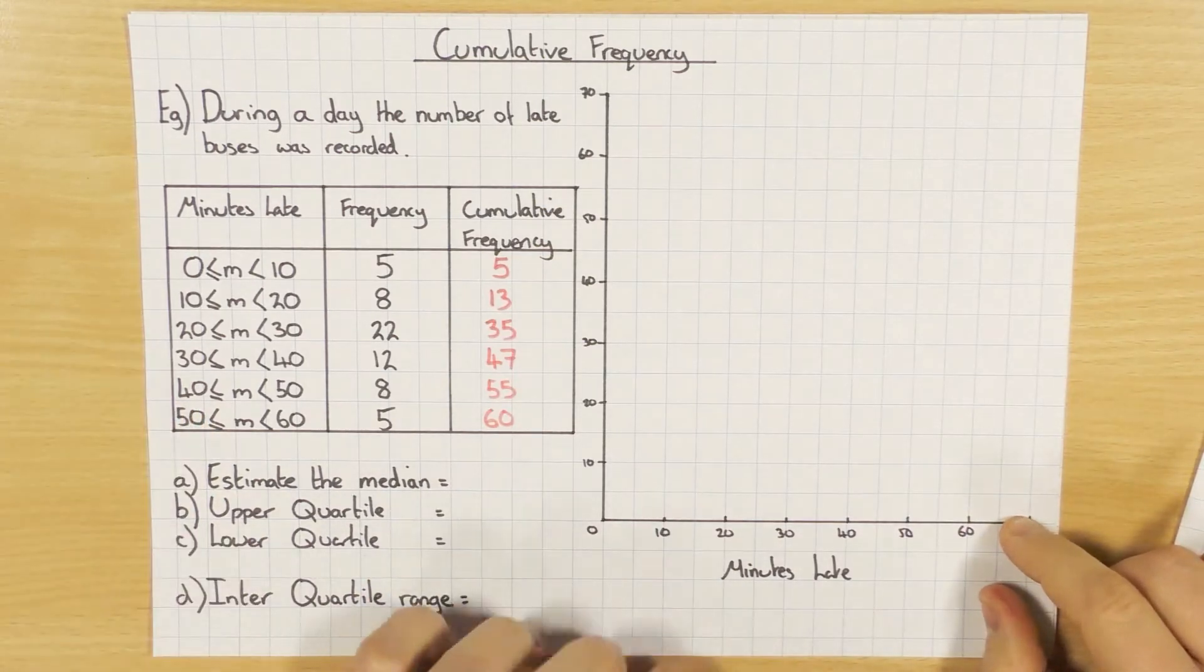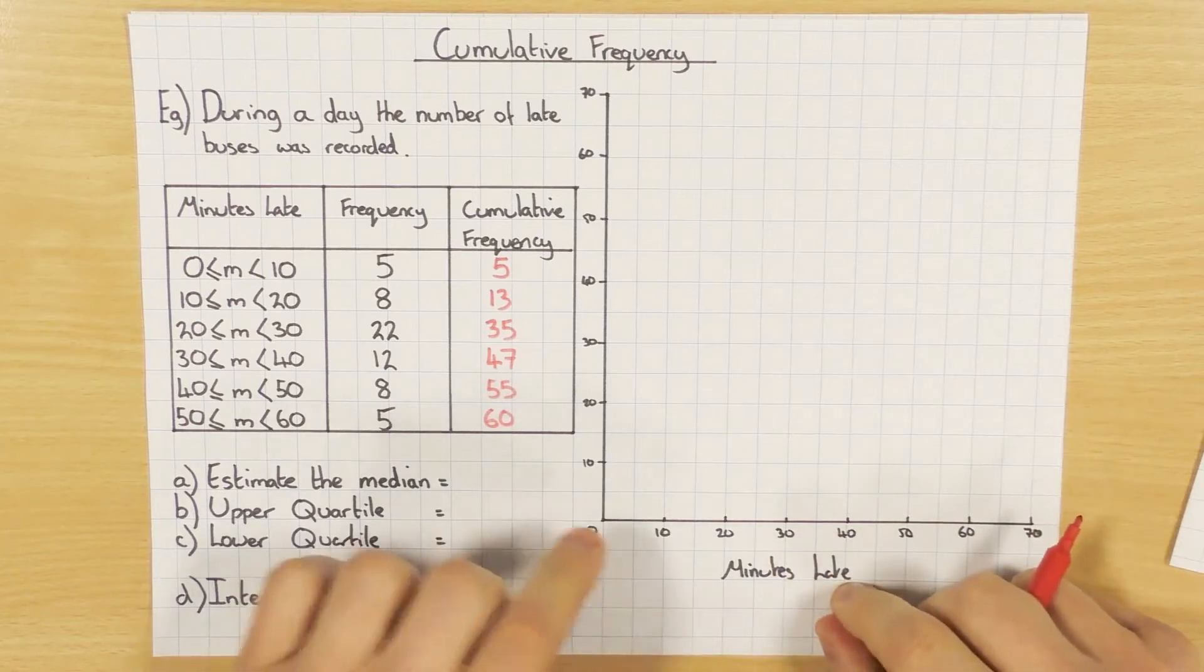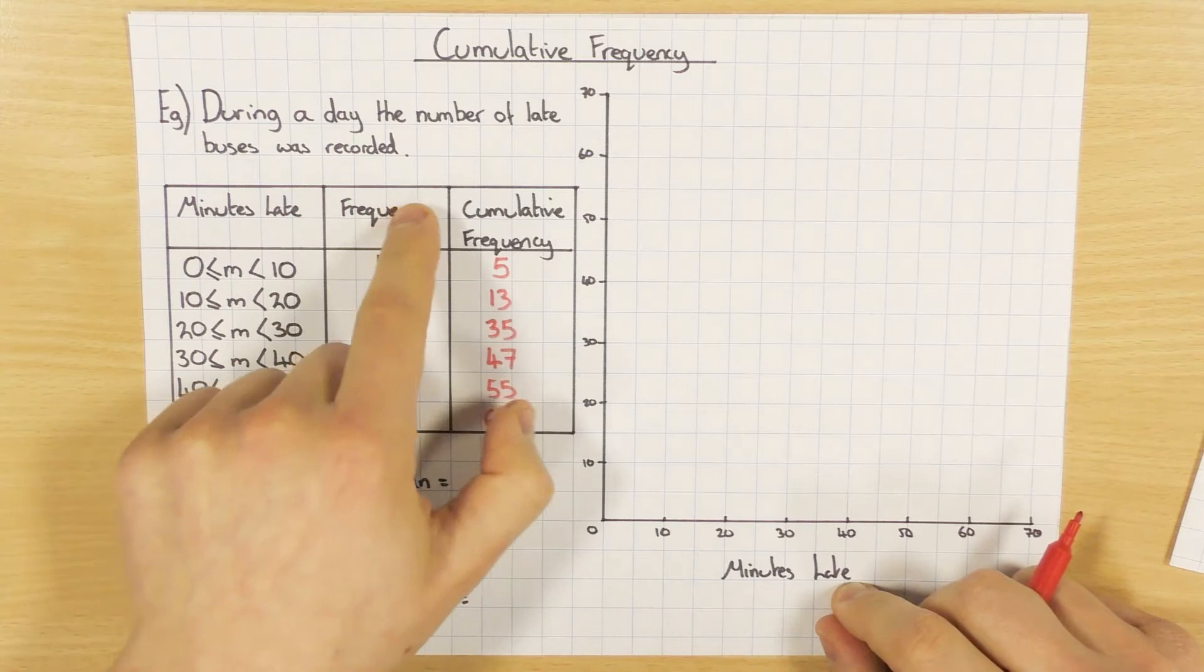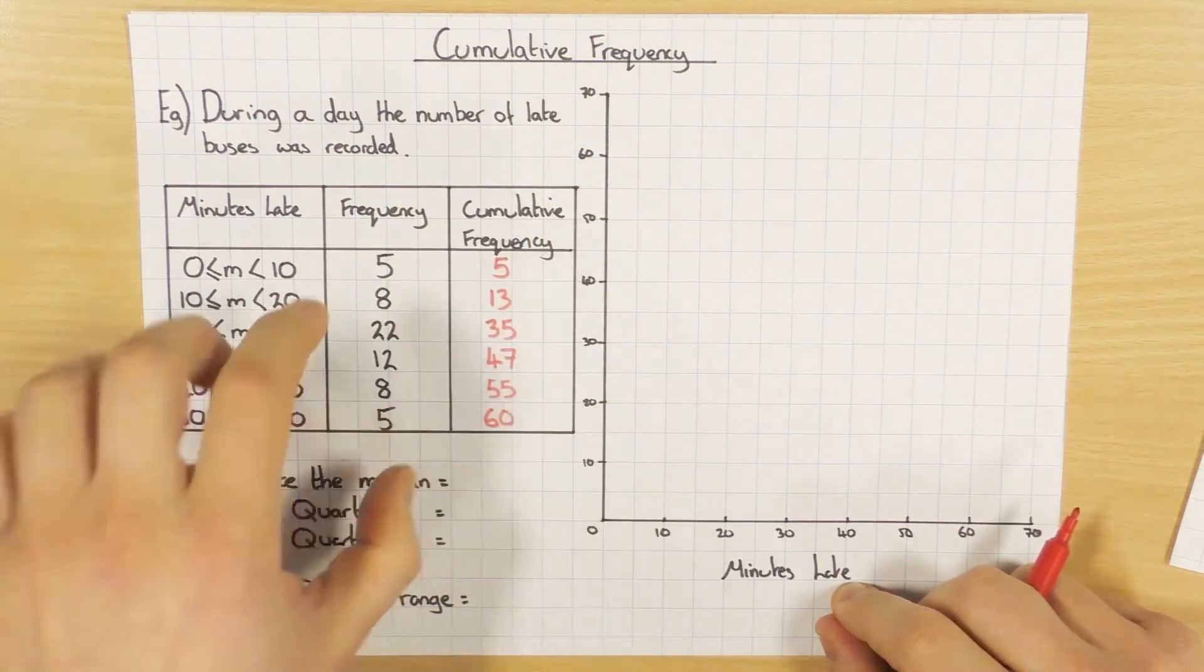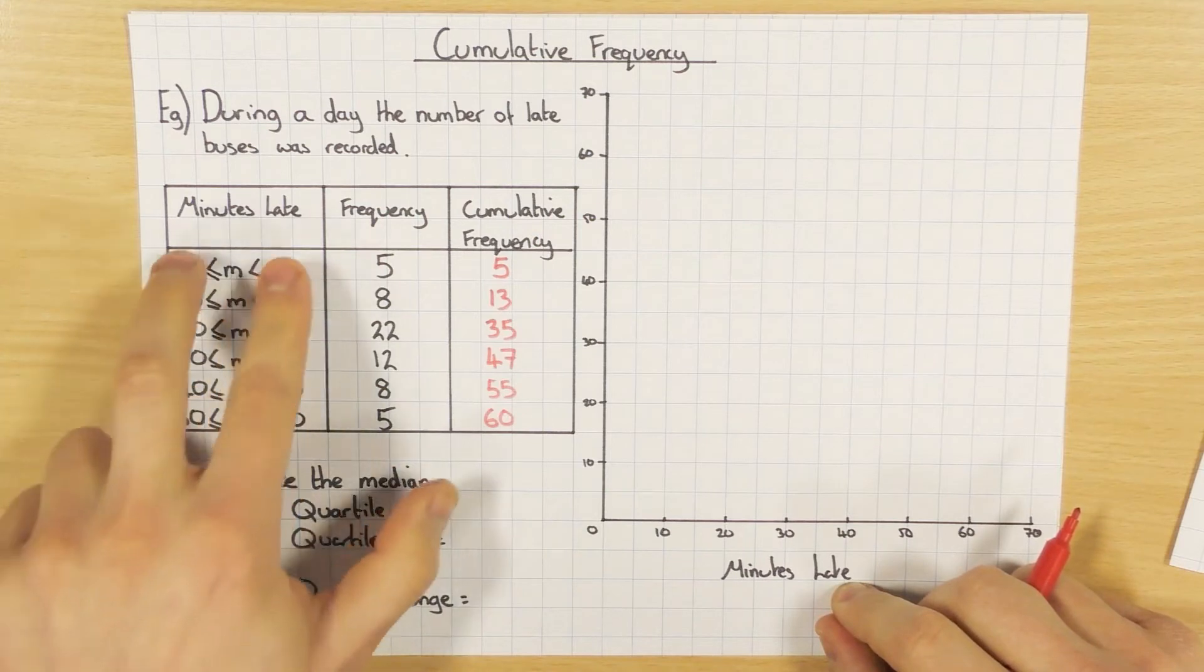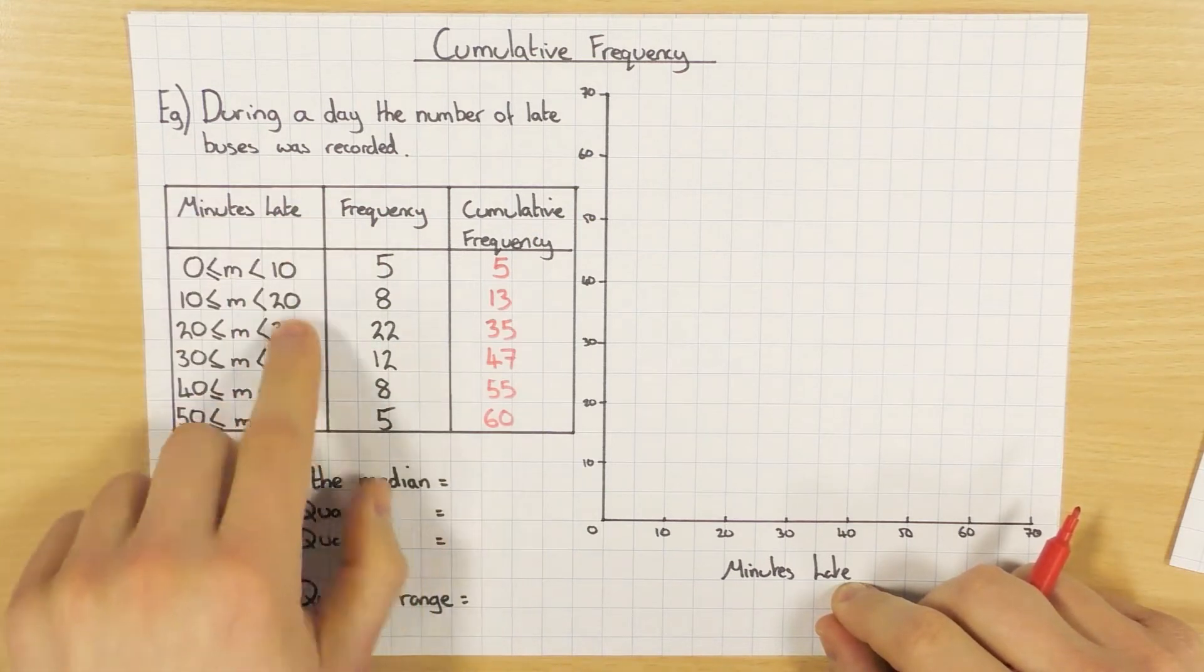Now when we plot it, a couple of things you have to be aware of. When you're plotting, you have to use the upper limit. Sometimes in the exam they'll give you an extra column and tell you to write the upper limit in it. Otherwise, you can just remember it and use it from this column here.